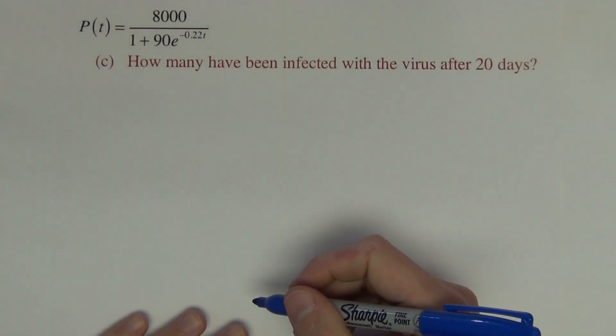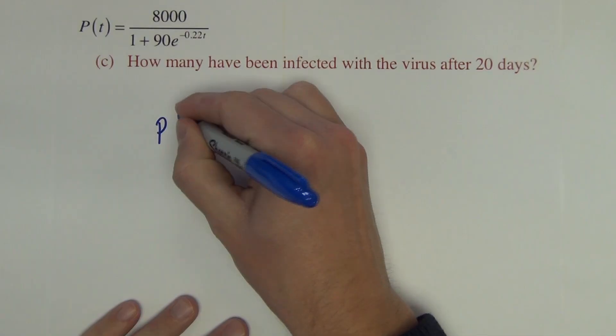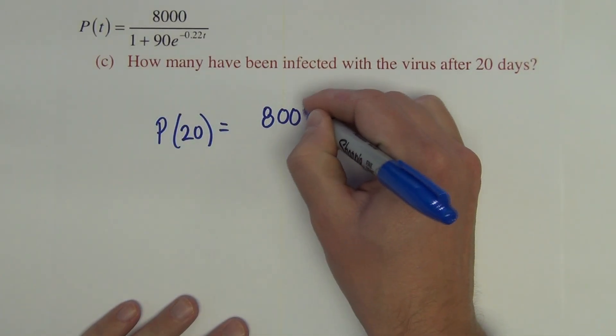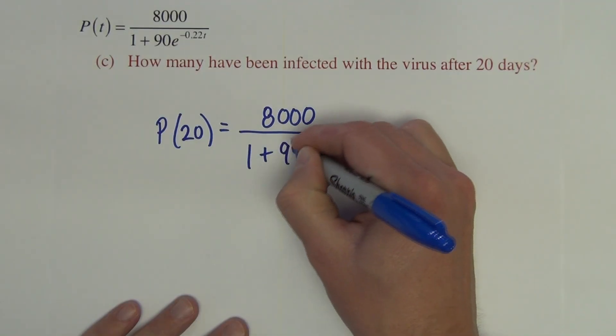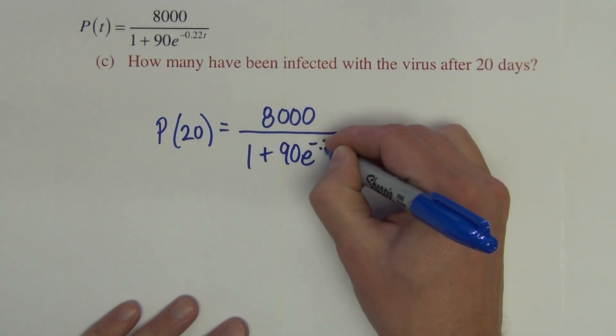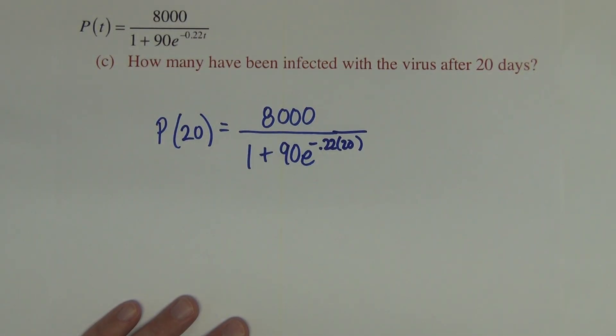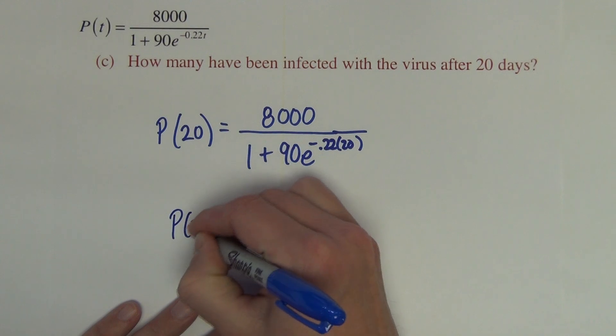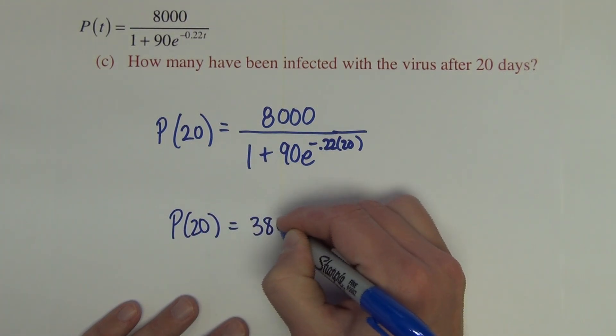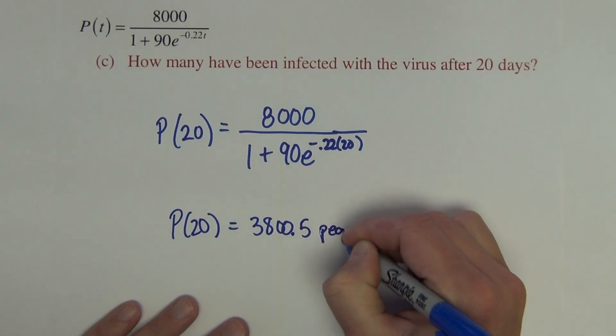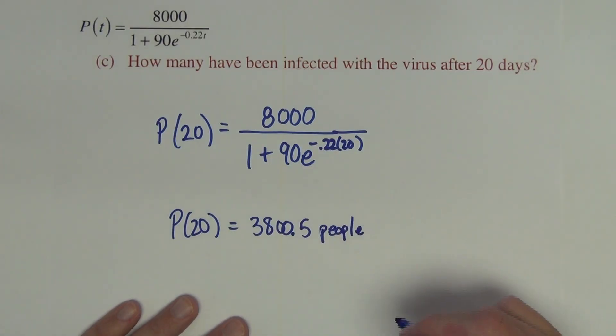Question C. How many have been infected with the virus after 20 days? So P(20) equals 8,000 times 1 plus 90e to the negative .22 times 20. Again, we are going with calculator work here. And I get after 20 days 3,800.5 people. So 3,800 people. Nearly half have been infected after 20 days.